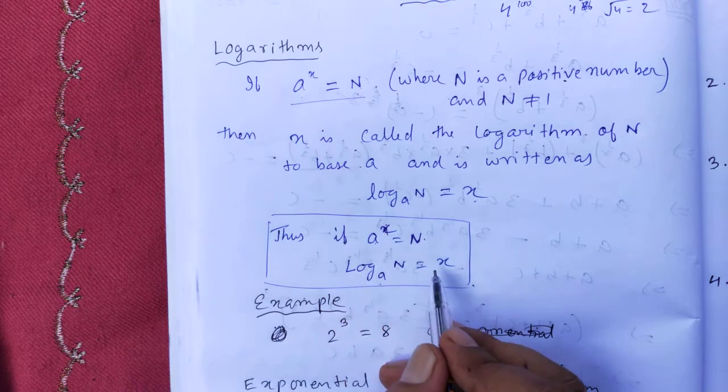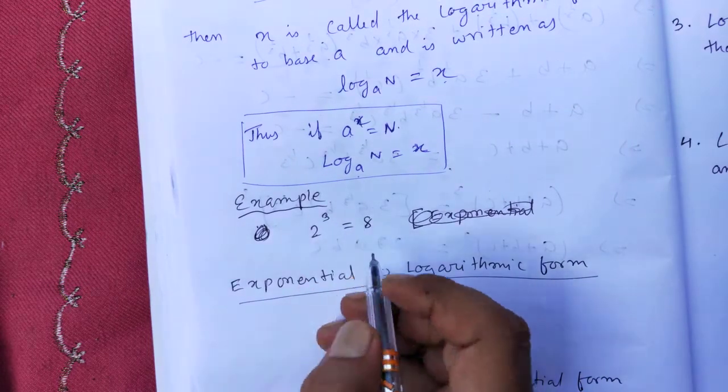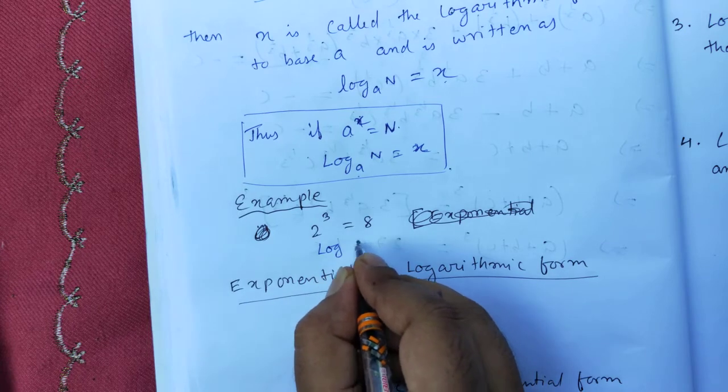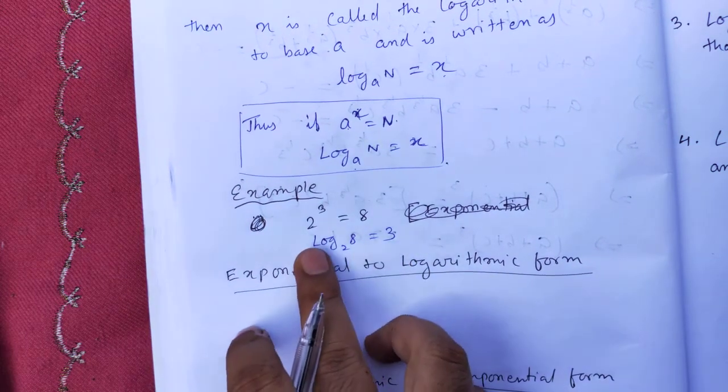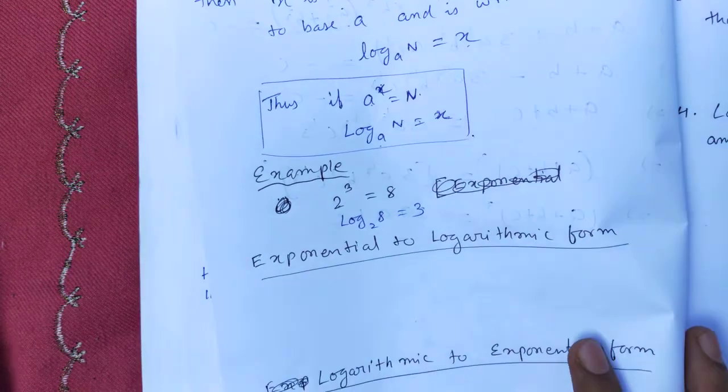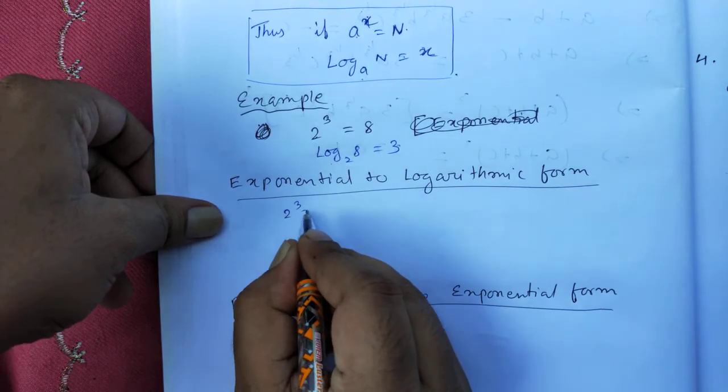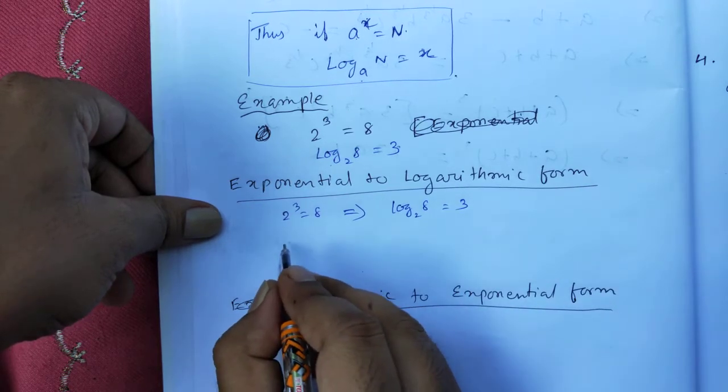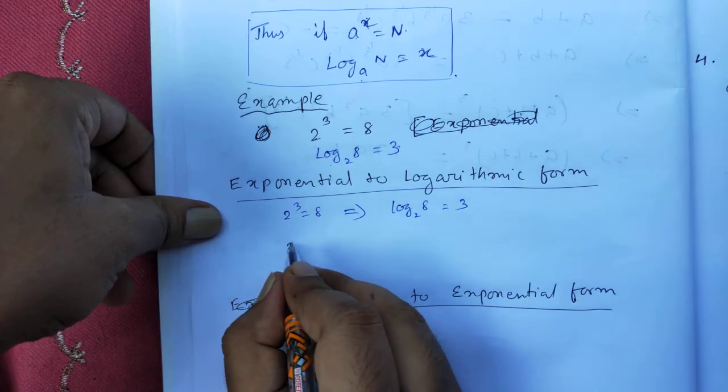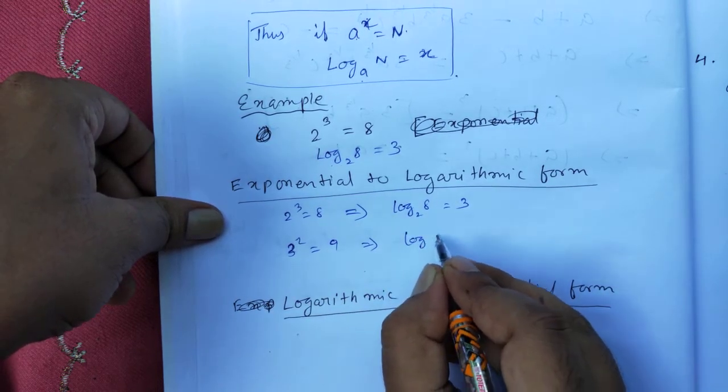For example, if 2^3 = 8, we know that, then in log form it will be log_2(8) = 3. So 3 is logarithm of 8 with base 2. Now we can do the conversion from exponential to logarithmic form. For example, 2^3 = 8, to convert into log form we have to write log_2(8) = 3. Or another example: 3^2 = 9, so we can write log_3(9) = 2. This form is called conversion of exponential form to logarithmic form.